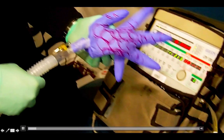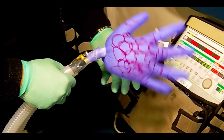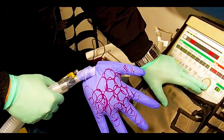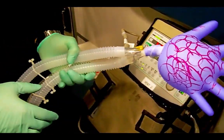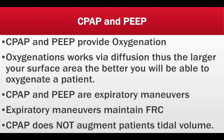Here is an actual video representation of what CPAP and PEEP look like on the LTV 1200 ventilator. Imagine this is your lung and these are the alveoli — deflated with no PEEP. Now with PEEP set at 15, you can see the alveoli held open. CPAP and PEEP provide oxygenation, which works by diffusion — movement of molecules from high concentration in the alveoli to low concentration in the bloodstream. The larger the surface area, the better you oxygenate the patient.